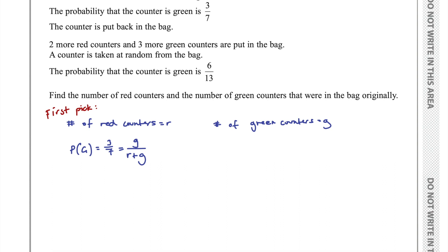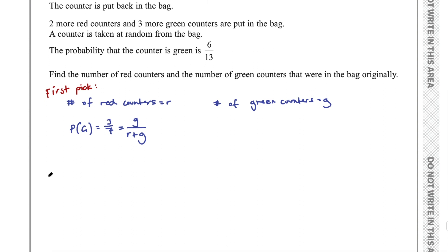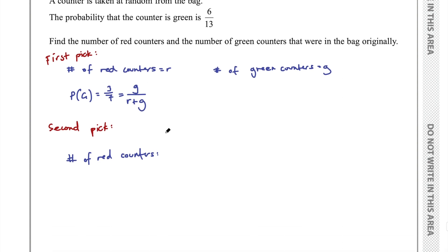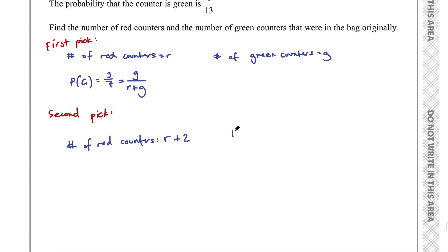So what's going on in the second pick? They've told us that there's two more red counters, three more green counters. Another part of solving algebraic problems is you want to introduce as few unknowns as possible. The less unknowns you have, the easier the problem is going to be to solve. They've told me they've added two more red counters. So I could represent that as the original number of red counters plus two, R plus 2. And then for the green counters, use the unknowns you already have. It's going to be G plus three.